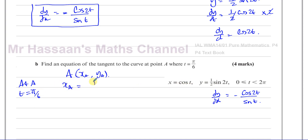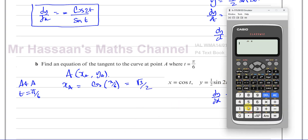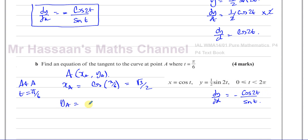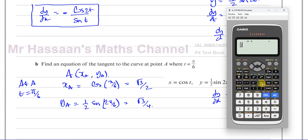The x-coordinate at A is cosine of π/6. Since π/6 is 30 degrees, cosine of 30° is √3/2. The y-coordinate at A is a half times sine of 2 times π/6, which is π/3. The sine of π/3 is also √3/2, but a half of that is √3/4. We can confirm both in the calculator.